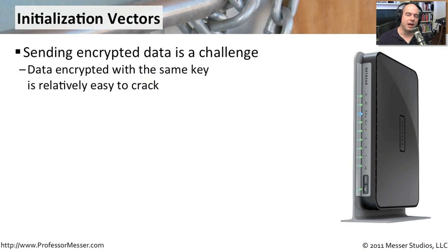Initialization vectors are a very common mechanism used when dealing with encryption technologies. Whenever you're sending information back and forth between devices, whether over a wired network or especially over a wireless network, you want to make it as hard as possible for a bad guy who's sneaking in and looking at that information to decipher it. And if you're using the same key to encrypt this information every time you're sending data, you're making it very easy for the bad guy to decrypt that information through his algorithms.